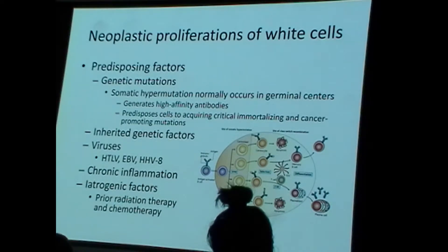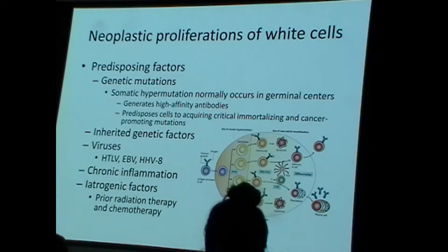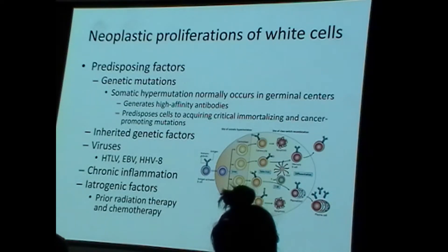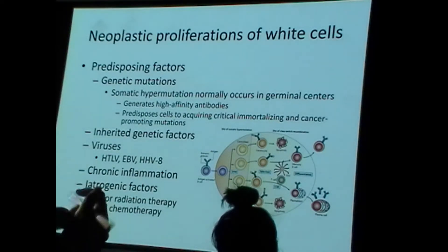Somatic hypermutation includes the word mutation. Just as mutations can occur in this physiologically important region of the genome for creating a targeted immune response, a mutation might accidentally happen in very important genes that play roles in cell stability — genes like TP53 or RAS. Genetics is really the main reason why white blood cells give rise to neoplasms.